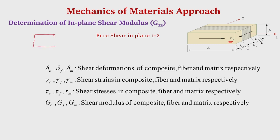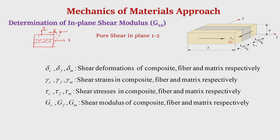Drawing only the 1-2 plane, with direction 1 horizontal and direction 2 vertical, if subjected to pure shear this is how the deformed shape will appear — the shear deformation is the lateral displacement. The shear deformations for the composite, fiber, and matrix are denoted delta_C, delta_F, and delta_M, and the corresponding shear strains are gamma_C, gamma_F, and gamma_M. G_C, G_F, and G_M are the shear moduli of the composite, fiber, and matrix respectively.